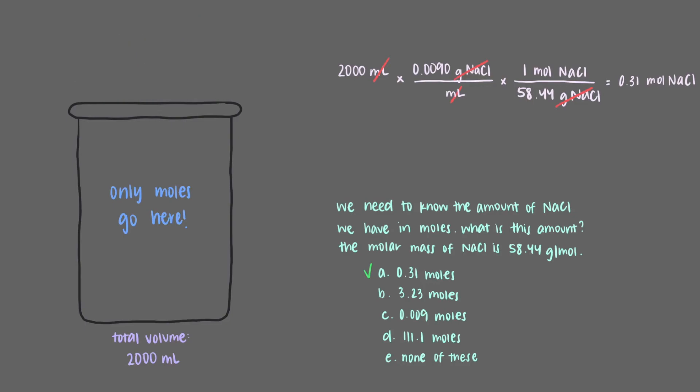But before we write 0.31 moles of sodium chloride in our beaker, we have to remember that sodium chloride is an ionic compound and ionic compounds always break up into ions when they are dissolved in water. So that means that our beaker actually has 0.31 moles of sodium ions and 0.31 moles of chloride ions. And the total volume of the beaker is 2 liters. We'll be able to answer the problem with this important information in our beaker.